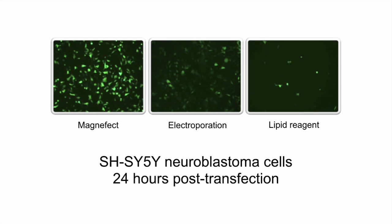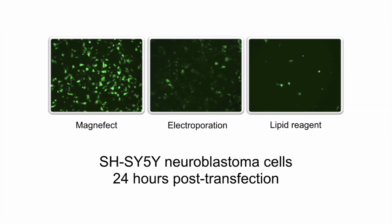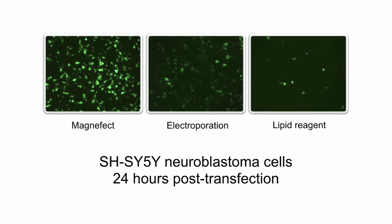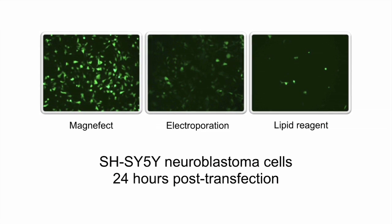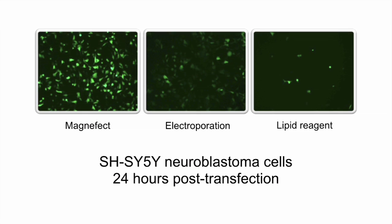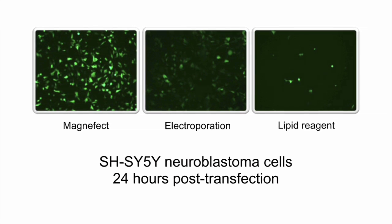As an example of how well the Magnafect Nano can perform, results are shown for the transfection of SH-SY5Y neuroblastoma cells where higher transfection efficiency and improved cell viability is observed when compared with use of a leading lipid reagent and electroporation techniques.